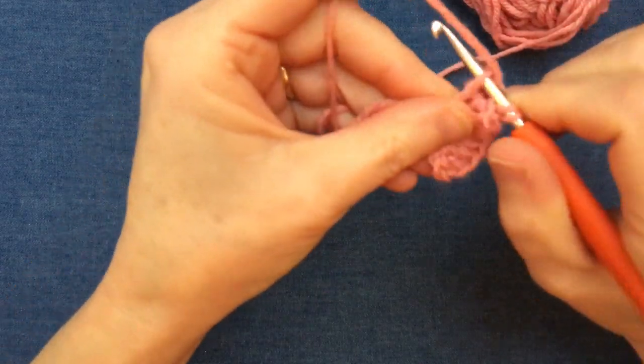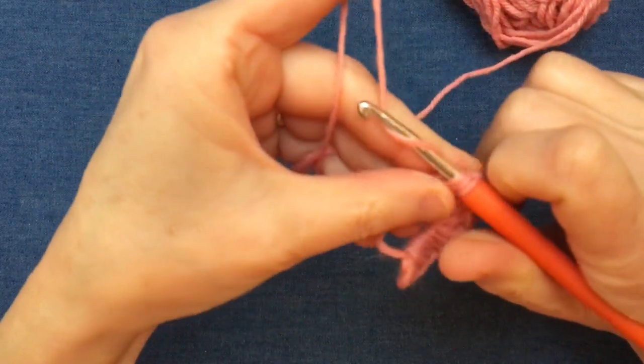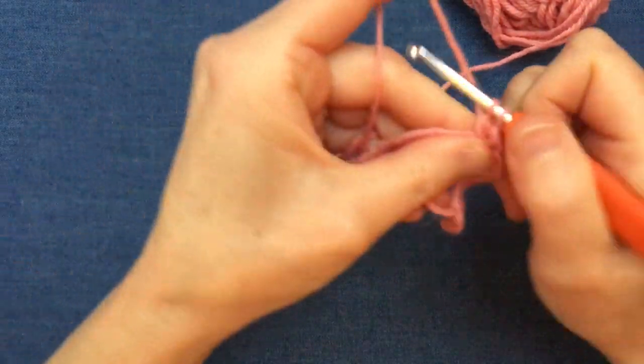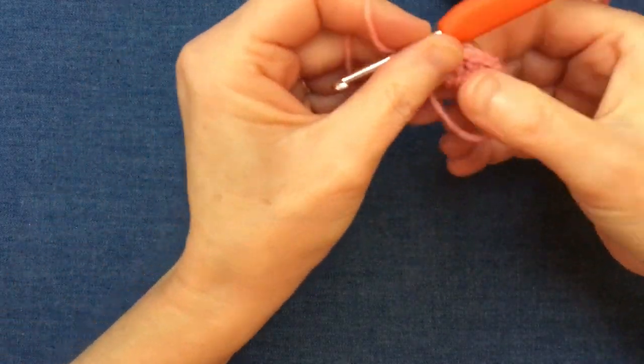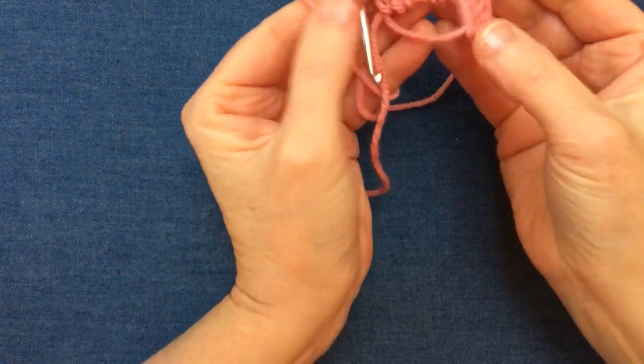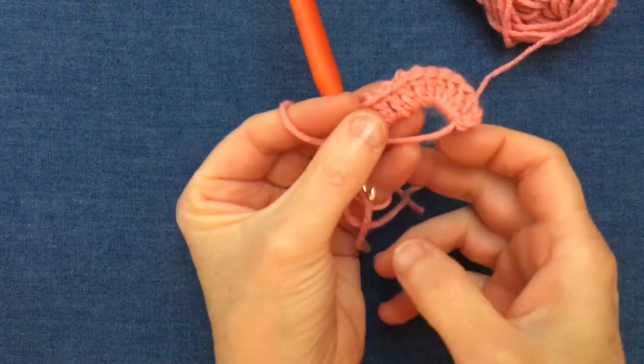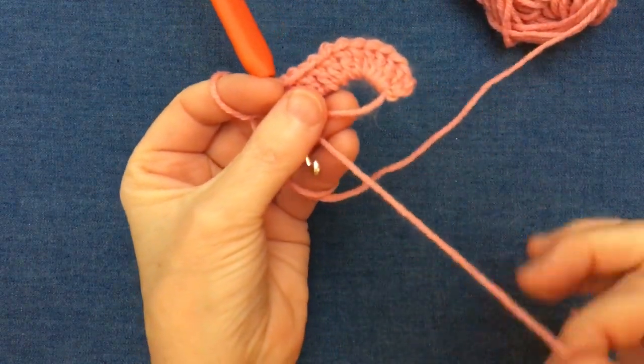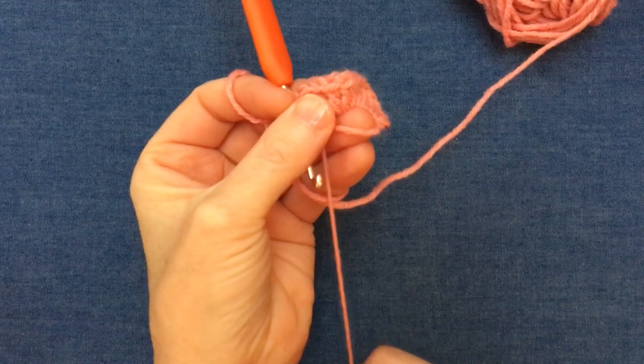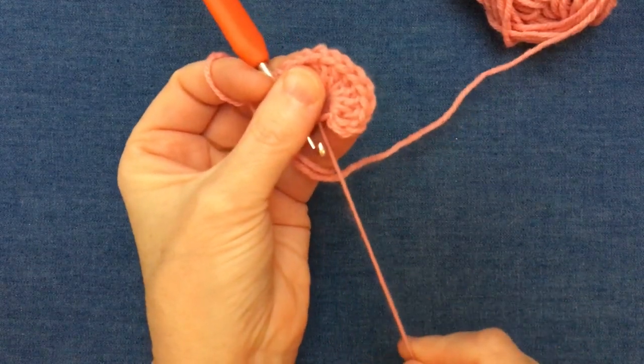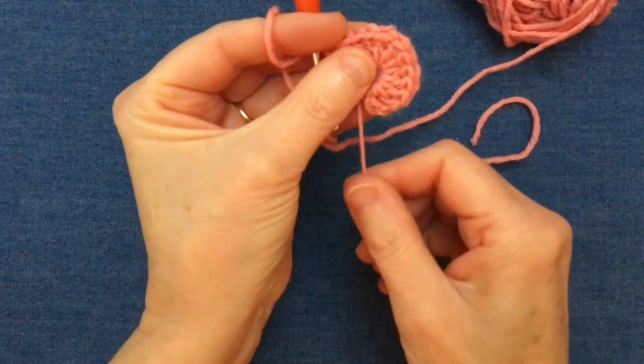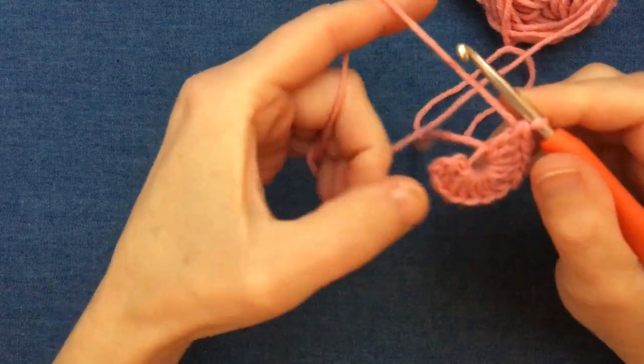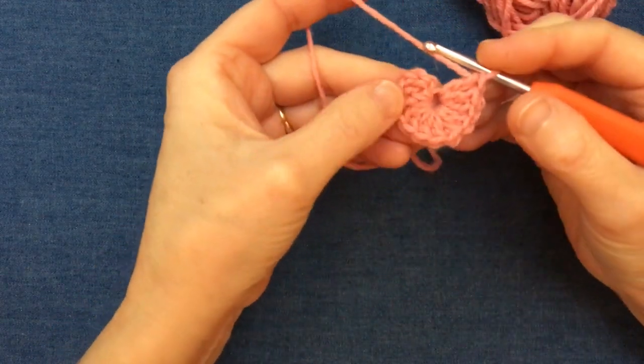Now at this stage the ring is still looking very big, but this is where the magic part comes in. So we've got this nice crescent of stitches and now I'm going to just gently pull the tail. And as I pull it you'll see the circle is beginning to now close up. I'm not going to do it completely yet because I actually want to close the ring with a slip stitch.